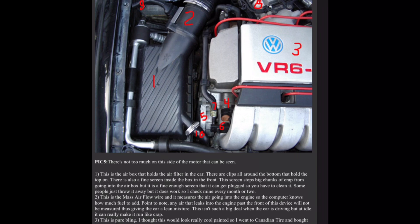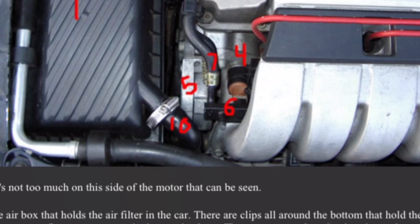This isn't such a big deal when the car is driving but at idle it can really make it run like crap. Three, this is pure bling. I thought this would look really cool painted so I went to Canadian Tire and bought some blue and red paint and had a buddy hand paint that for me. Looks so cool. Four, this is injector number one. There are five more across the fuel rail, pick five, six.